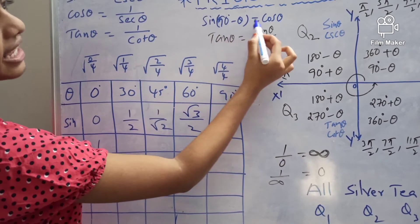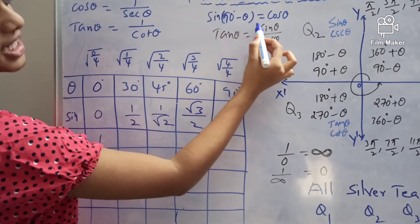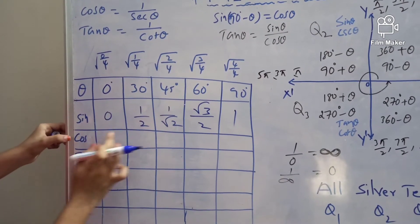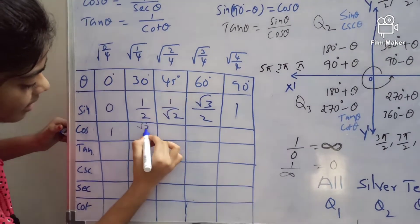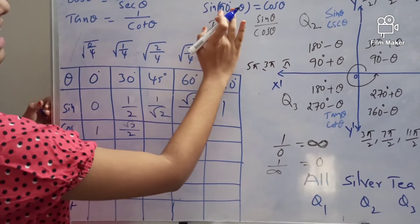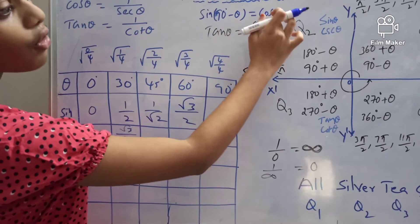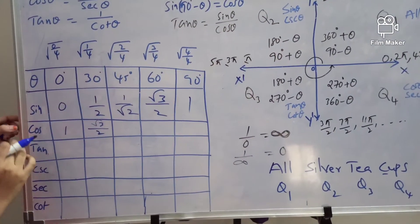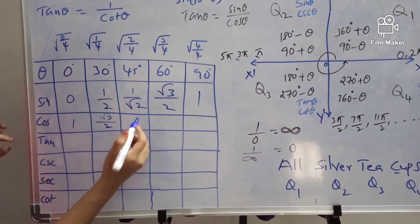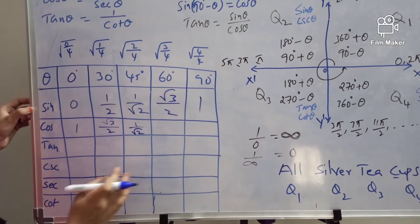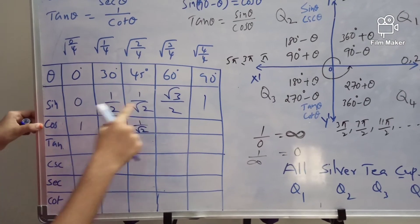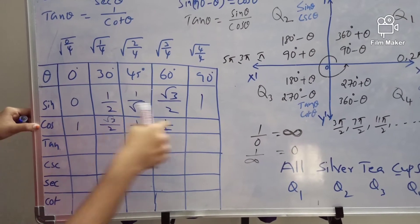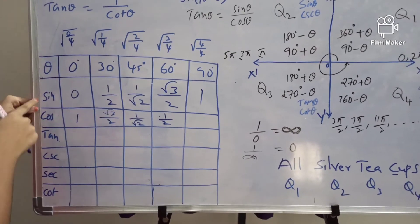For cos 30°: sin(90° − 30°) = cos 30°, so sin 60° = cos 30° = root(3)/2. For cos 45°: sin(90° − 45°) = cos 45°, so sin 45° = cos 45° = 1/root(2). For cos 60°: cos 60° = sin 30° = 1/2. For cos 90°: cos 90° = sin 0° = 0.